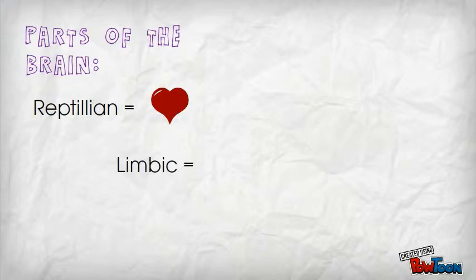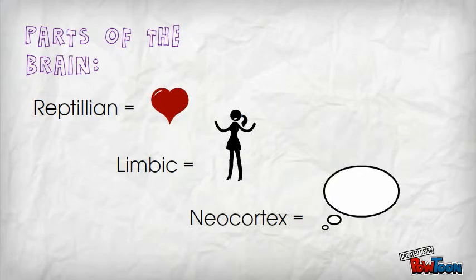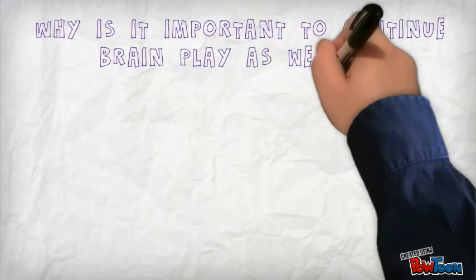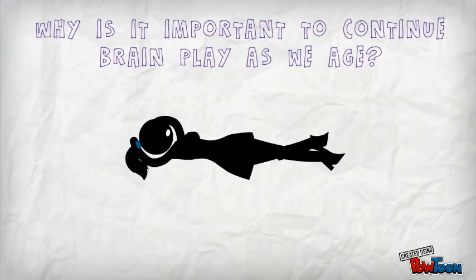The neocortex is where our memory and imagination reside among other things. As we get older, our brain's processing speed slows down, kind of like our metabolism. We need to keep our brain stimulated for optimum growth, and play can assist with that.